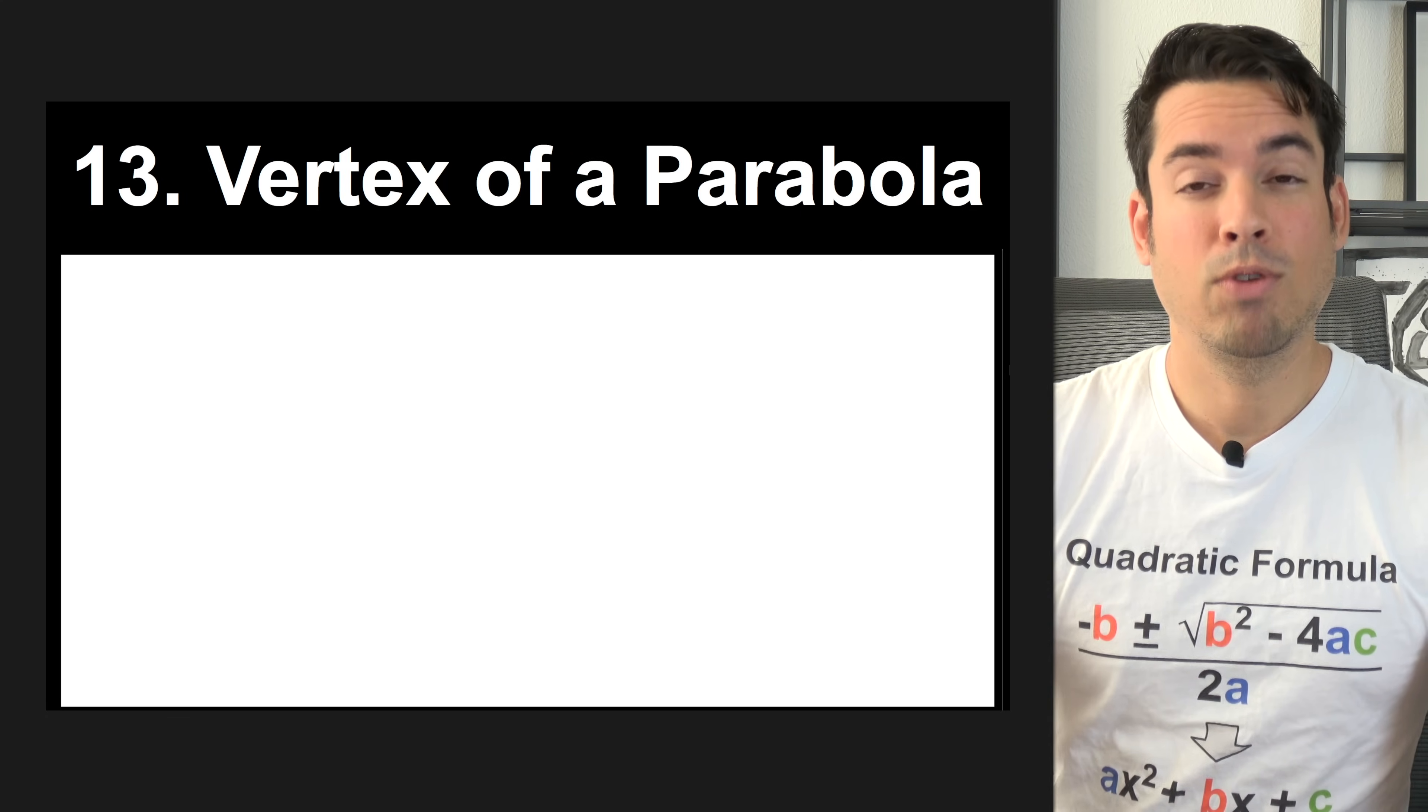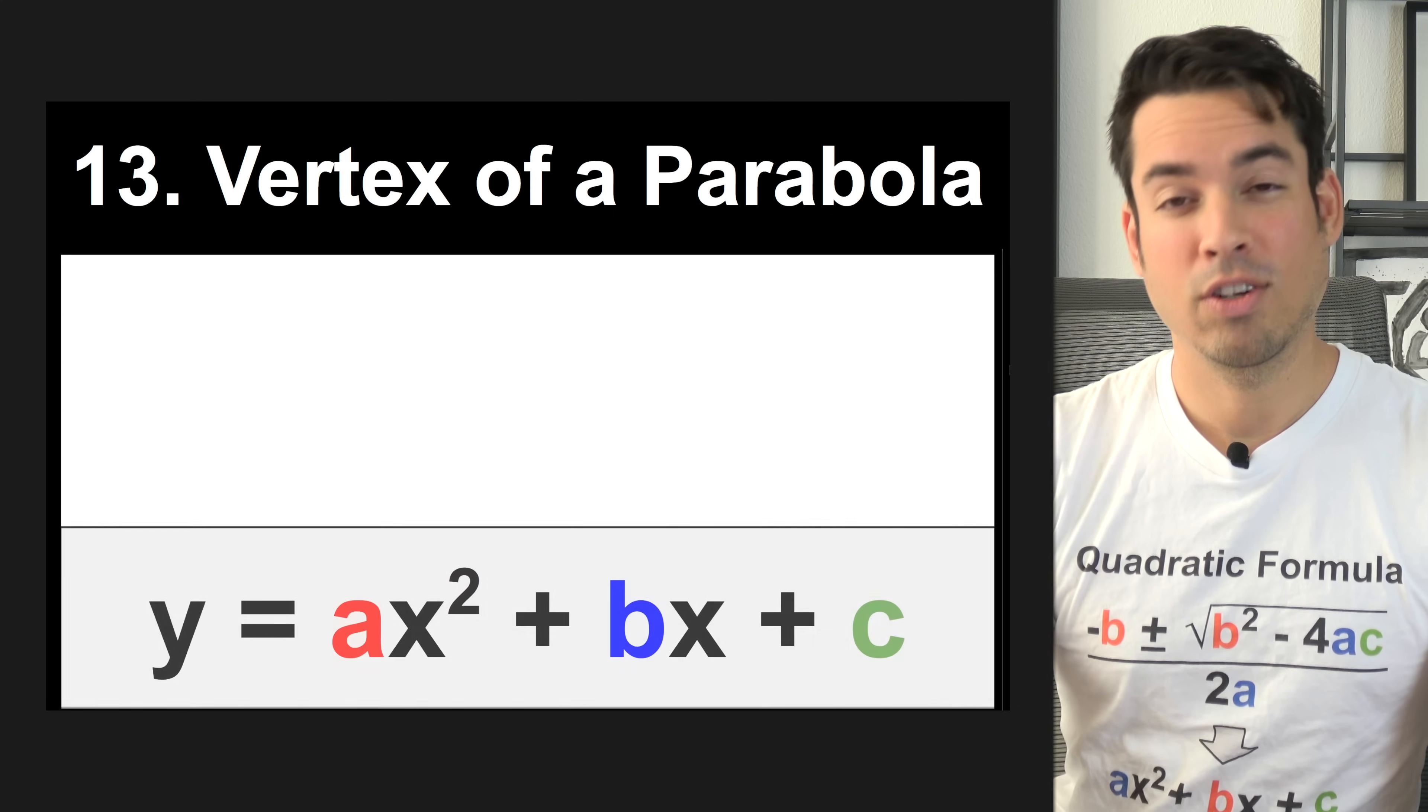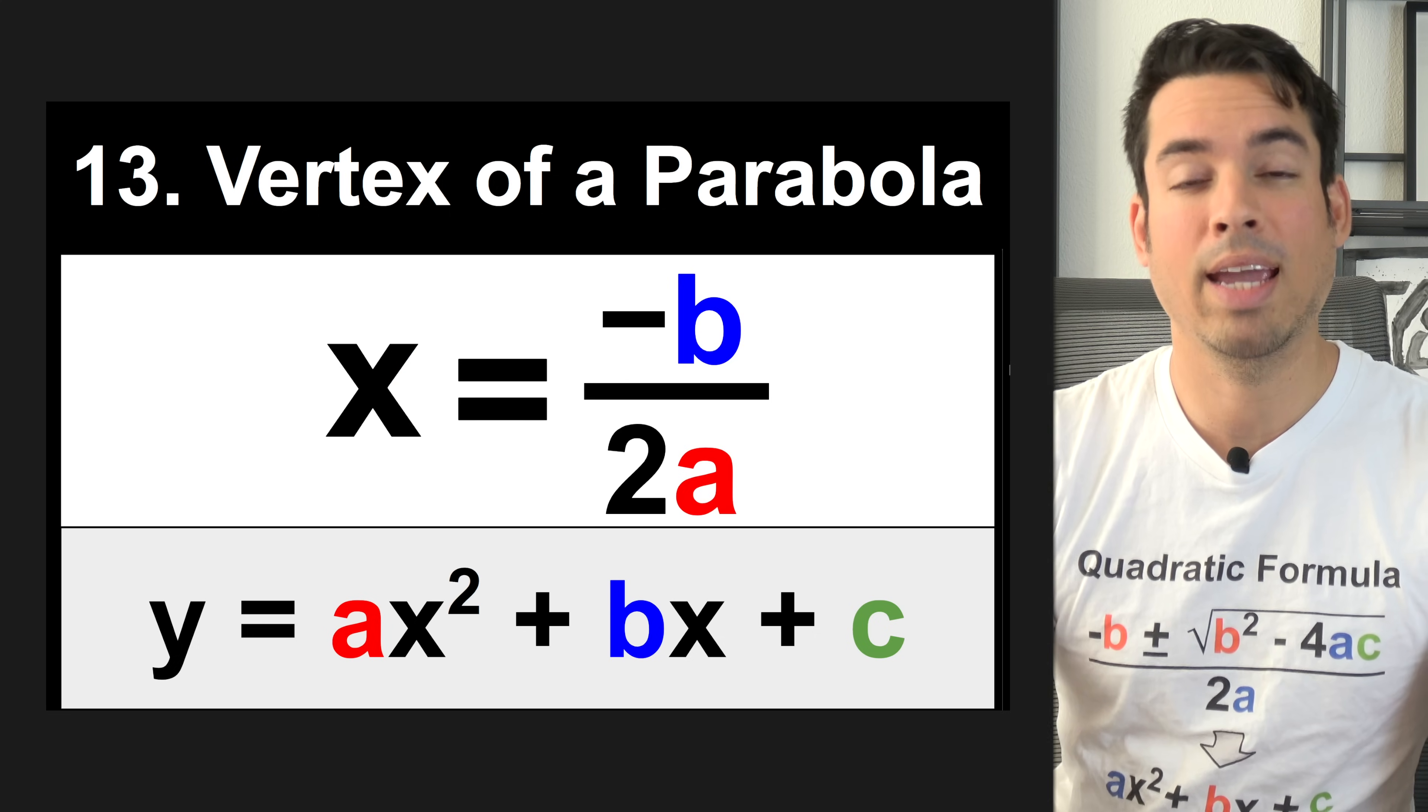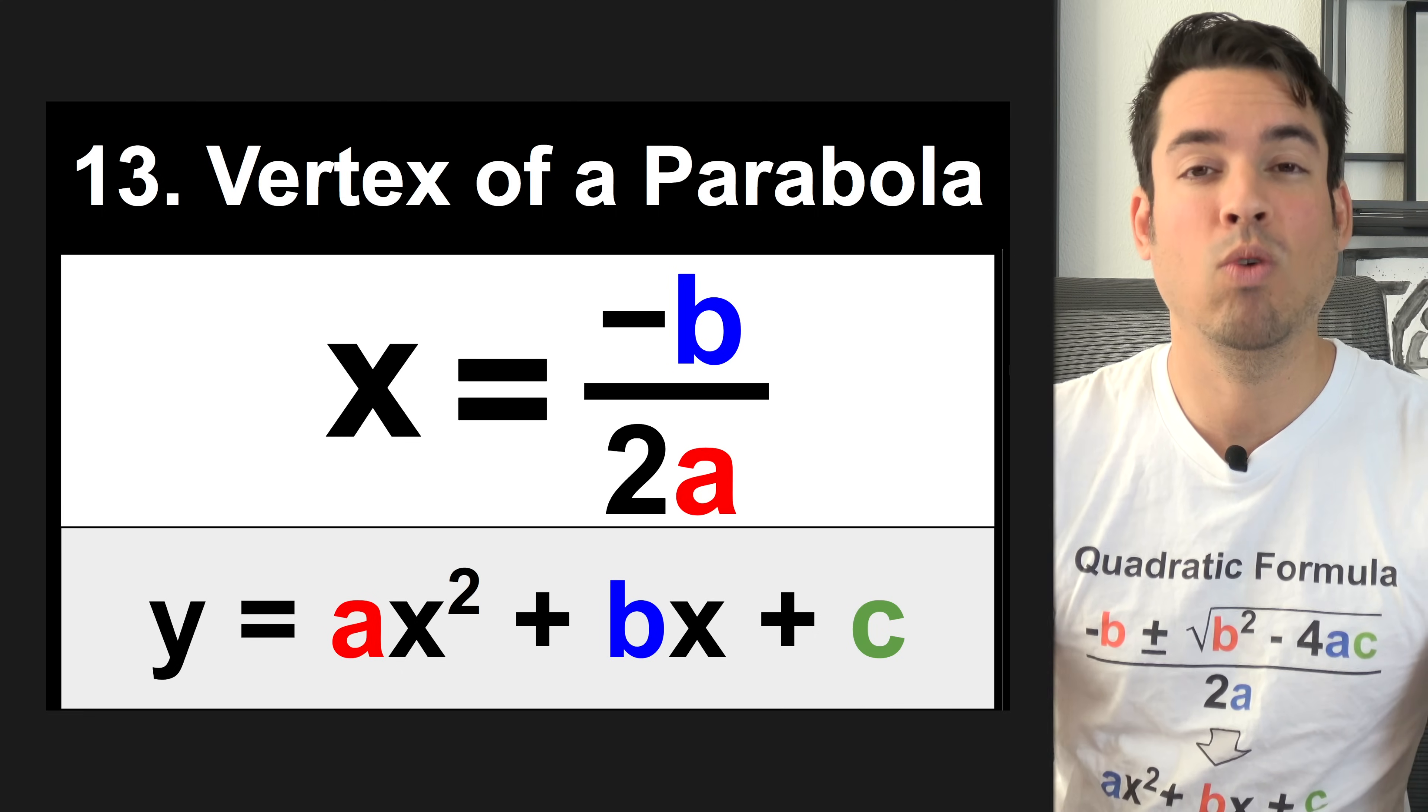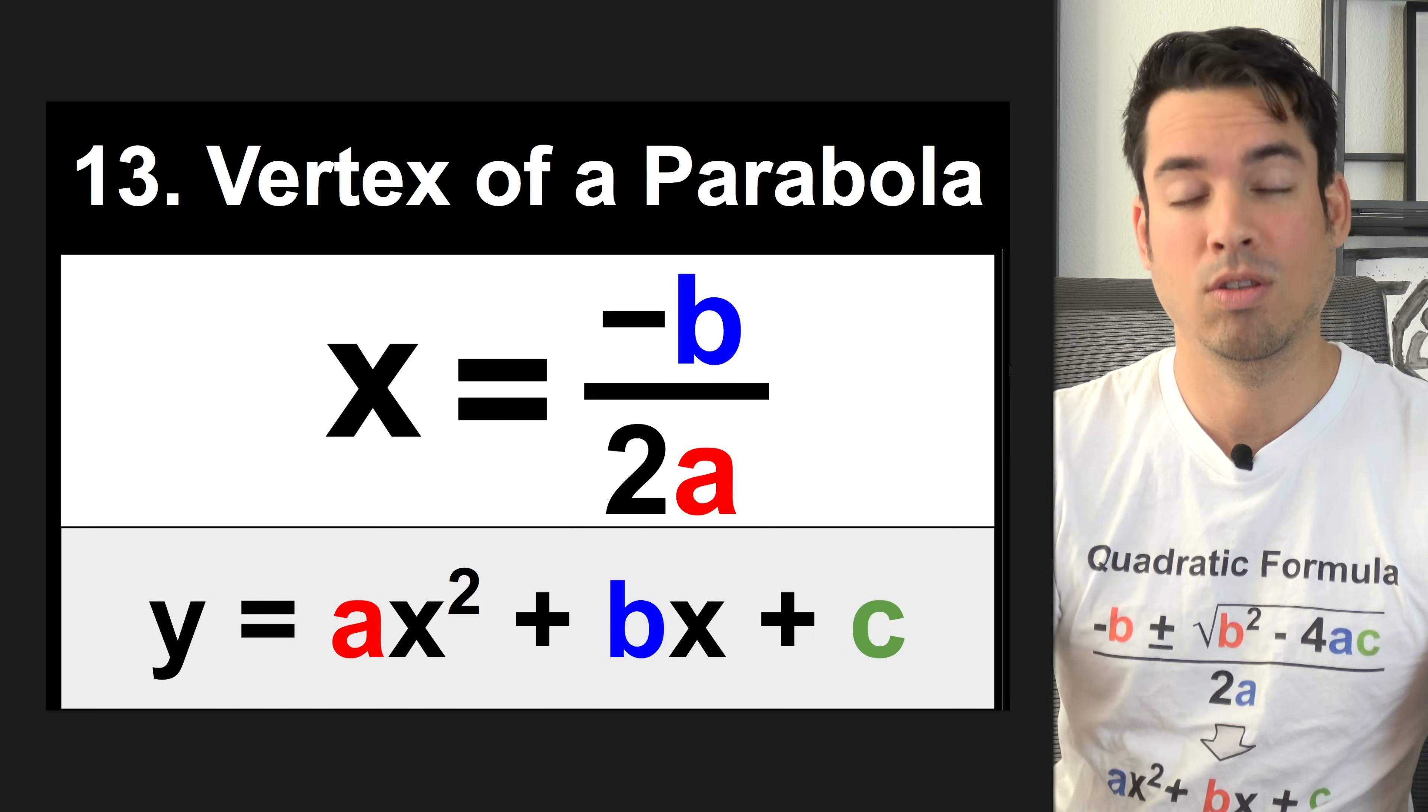Now we got the formula for the vertex of a parabola when the parabola is in standard form. Here is standard form, and the vertex can be found at negative b over 2a. Just to clarify, this will give you the x value of the vertex. If you want the y value of the vertex, you have to take this value and plug it back into the quadratic.